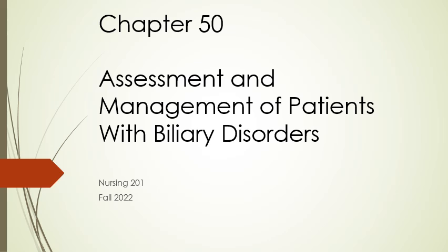The good news is it's only one chapter — chapter 44 of your Brunner 15th edition. It's a very short chapter and there's not that much stuff, not that many diseases or diagnoses to learn about. Really the two main organs we're going to be looking at are the gallbladder and the pancreas, so the two main disorders are cholelithiasis and pancreatitis.